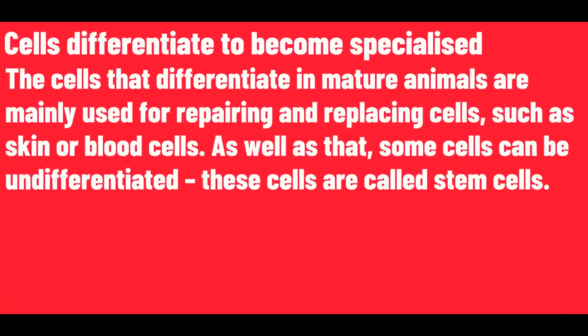The cells that differentiate in mature animals are mainly used for repairing and replacing cells, such as skin or blood cells. Some cells can be undifferentiated — these cells are called stem cells.